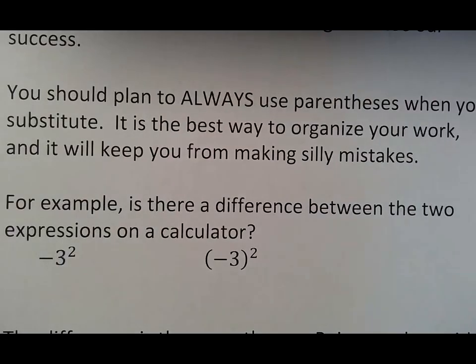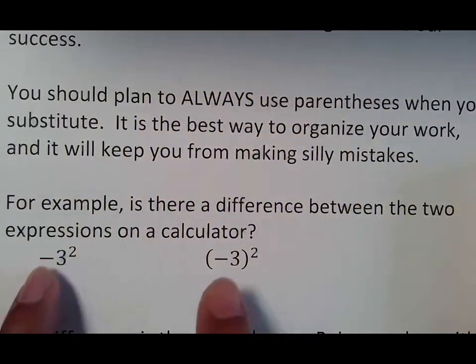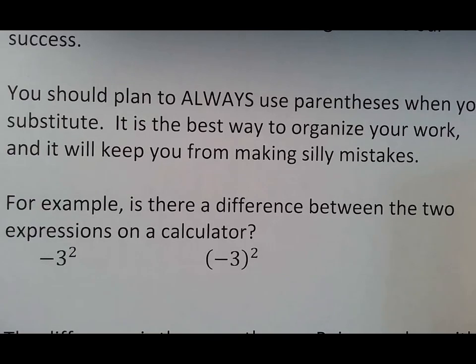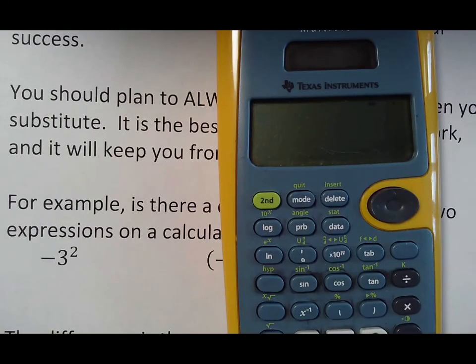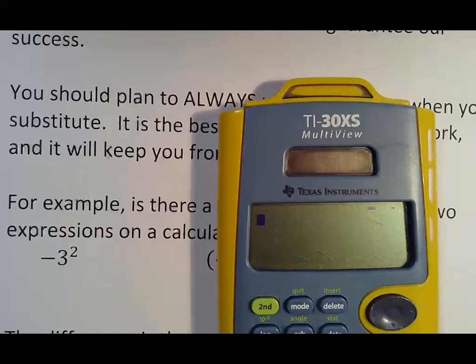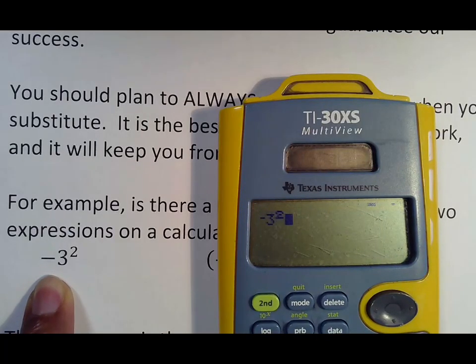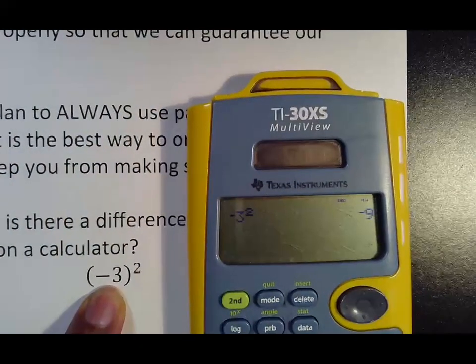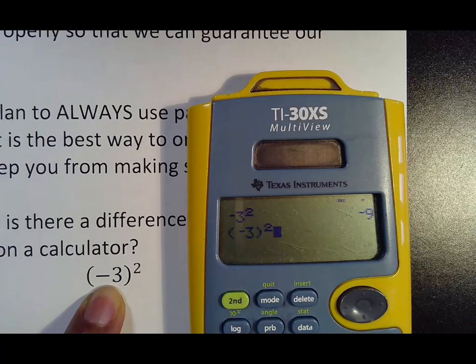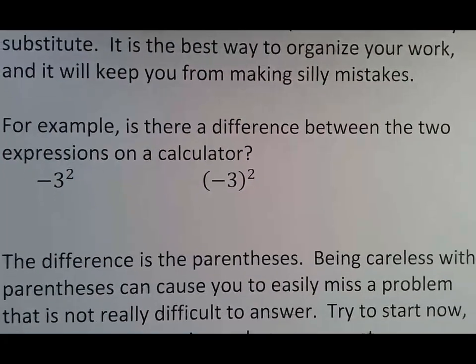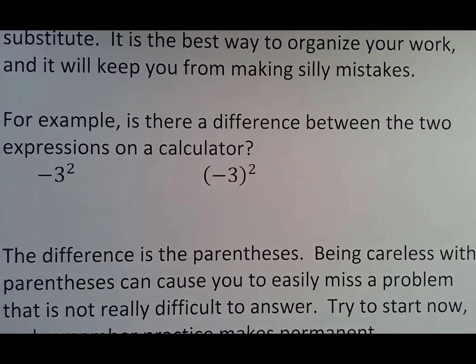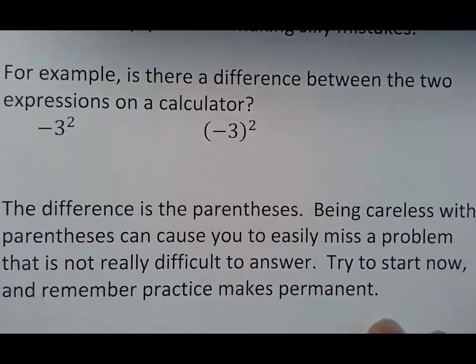For example, if I take this calculator and I type in, because these two things look the same. Negative three squared and parentheses negative three squared look the same. But the issue is they are not the same. Let me get this to a point where I can see. Sorry. I'm kind of dark here in the room. Anyway, negative three squared. If I type this in as it is negative three squared, I get the answer negative nine. If I type in exactly what I see here, parentheses negative three close squared, I get the answer of nine. Obviously, because these two things do not equal the same, they are not the same. And the difference is the parentheses. So if you're careless with your parentheses, it can cause you to easily miss a problem that is not really difficult to answer.